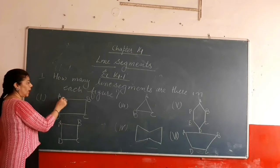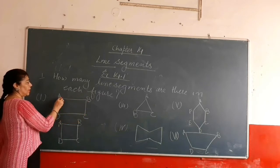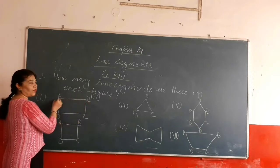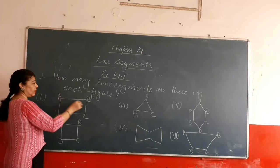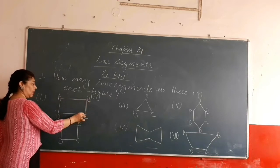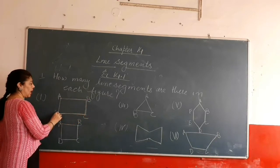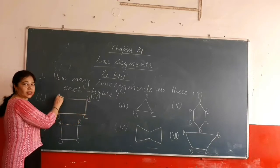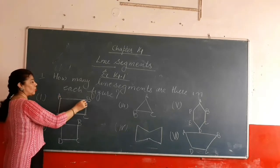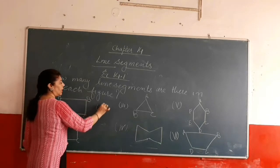In this figure, the points are A, B, C, D. A to B is one line segment, second is BC, third is CD, and fourth is DA. So there will be four line segments.